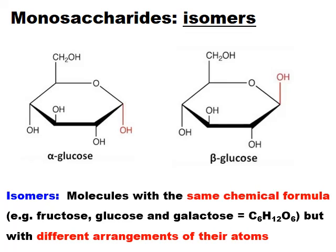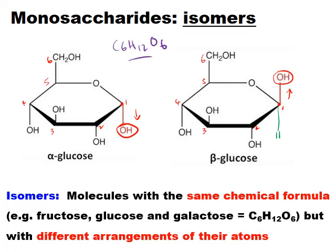When two molecules have exactly the same chemical formula — for example hexose sugars C6H12O6 — but a different arrangement of their atoms, we call these isomers. In alpha glucose, the OH group on carbon one points downwards. In beta glucose, the OH group on carbon one points upwards. Correspondingly, in alpha glucose the hydrogen on carbon one points up, and in beta glucose it points down. These OH groups have a different orientation attached to carbon one in alpha and beta glucose.